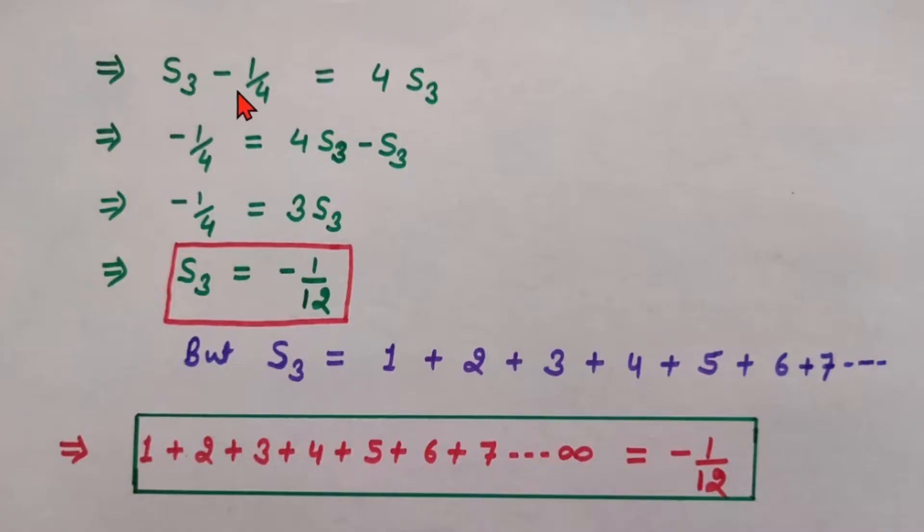S3 minus 1 by 4 equals to 4 times of S3. And you can write it as minus 1 by 4 equals to 4 times of S3 minus S3. If you transfer this S3 to this side, it will be of minus sign. 4S3 minus S3 is 3S3. And here it is minus 1 by 4. So from this equation, S3 will be minus 1 by 12.